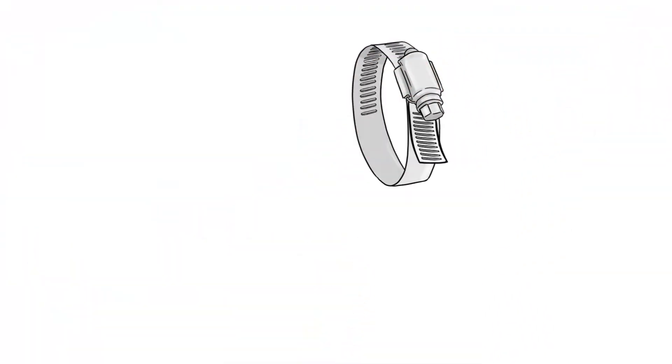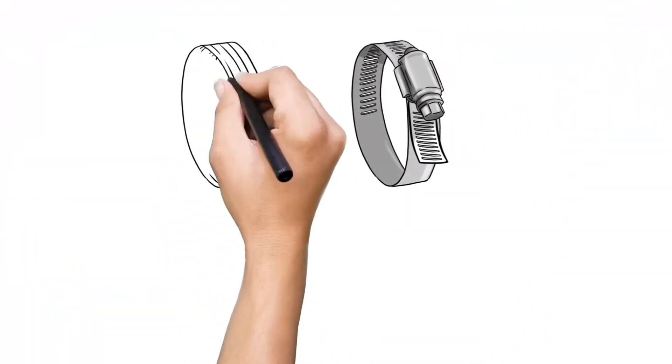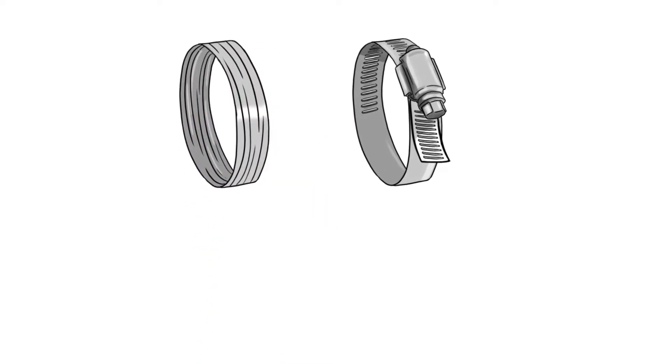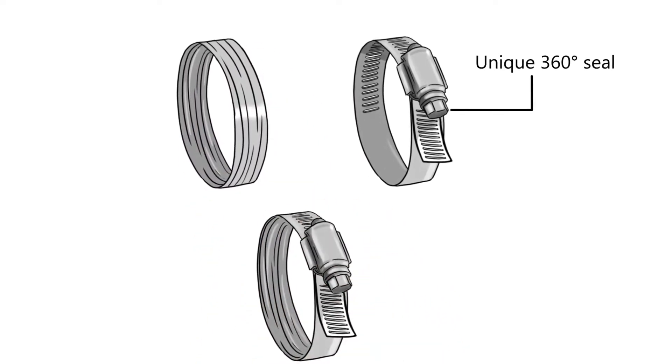With its integrated two-piece system, Trident's SmartSeal clamp rides on top of the lubricated liner, distributing even pressure to form a unique 360-degree seal around the joints.